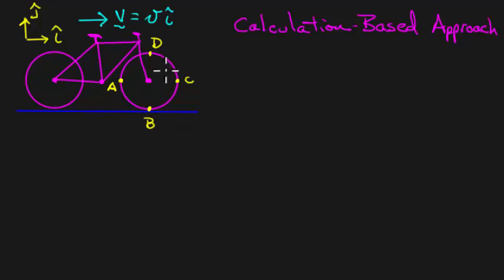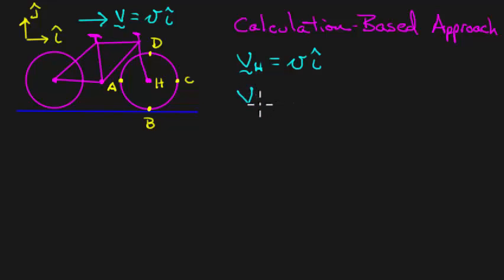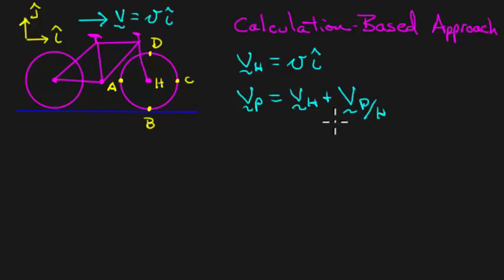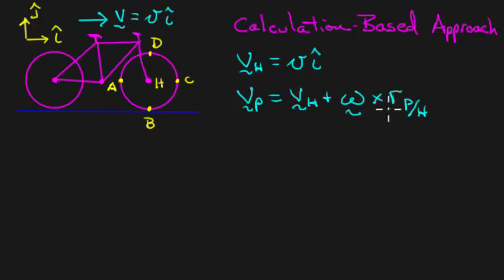To find the velocities of these points on the wheel, we want to relate them to the velocity of something we know. The thing we know is the velocity of the hub — the point right here where the wheel connects to the fork. The fork is connected to the frame, and they are all one rigid body, assuming we're not turning the handlebar. So the velocity of the hub is v in the i-hat direction. The velocity of any point on the wheel equals the velocity of the hub plus omega cross the position vector of that point relative to the hub.